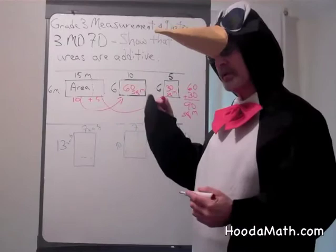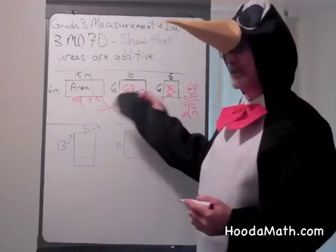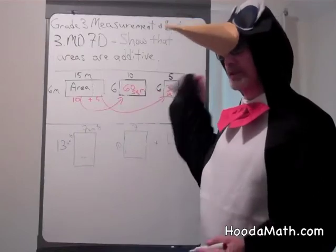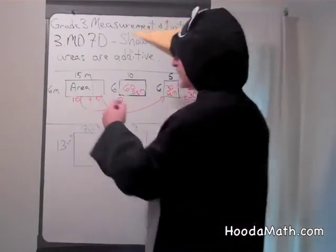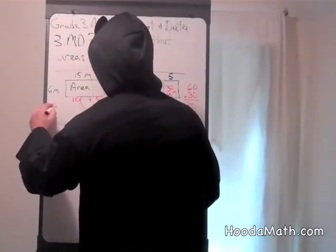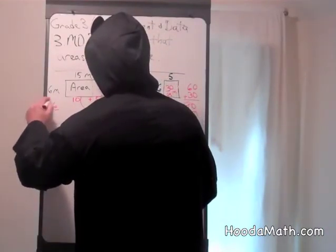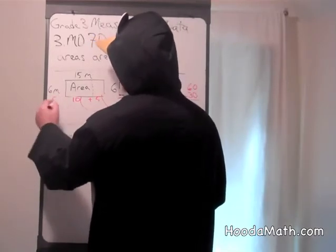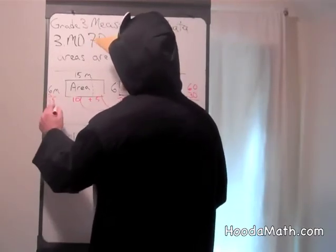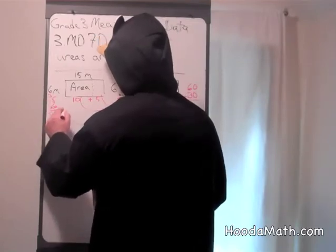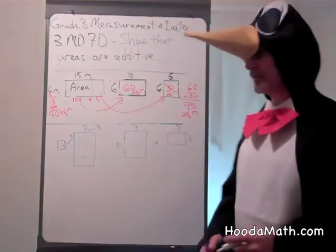We can do this mental mathematics. 6 times 10 is 60, 6 times 5 is 30, 60 and 30 is 90. That's a little bit easier than multiplying 6 times 15. 6 times 15, we'd have to do 6 times 5 is 30, regroup, bring 3 here. 6 times 1 is 6, plus 3 is 9. As you can see, we get the same results.